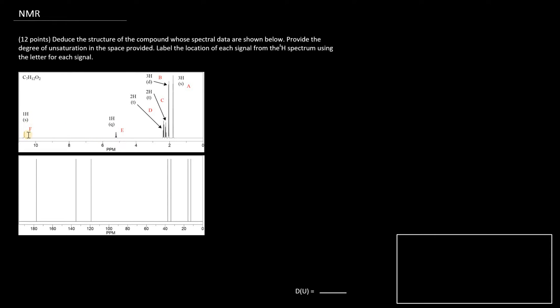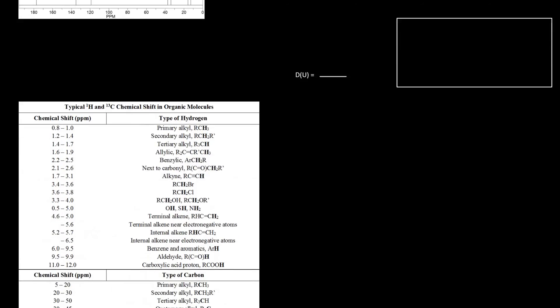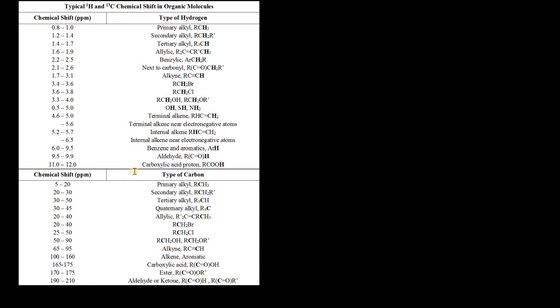Now, the first thing I noticed was the 11 parts per million 1H singlet. That 1H singlet is typical of a carboxyl, which exists between 11 and 12 parts per million. So it's very likely we have a carboxyl.